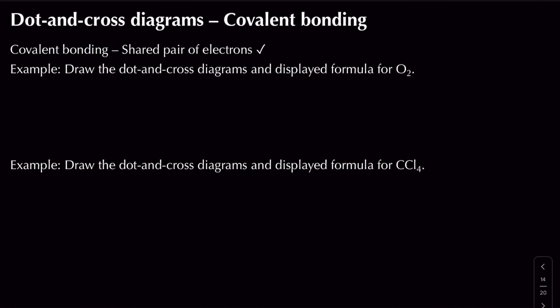In this video we're going to be looking at covalent bonding and how we can draw a dot and cross diagram for it. Covalent bonding is described as being the shared pair of electrons itself.